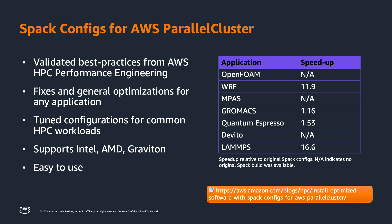If you use this config on your cluster, almost all of your applications will benefit from it. There are also application-specific tunings for common HPC workloads — OpenFOAM, Worf, IMPAS, GROMACS, Quantum ESPRESSO — they're listed in this table, which shows the speed up between a naive Spack build and the performance-engineered version we're talking about in these Spack configs.